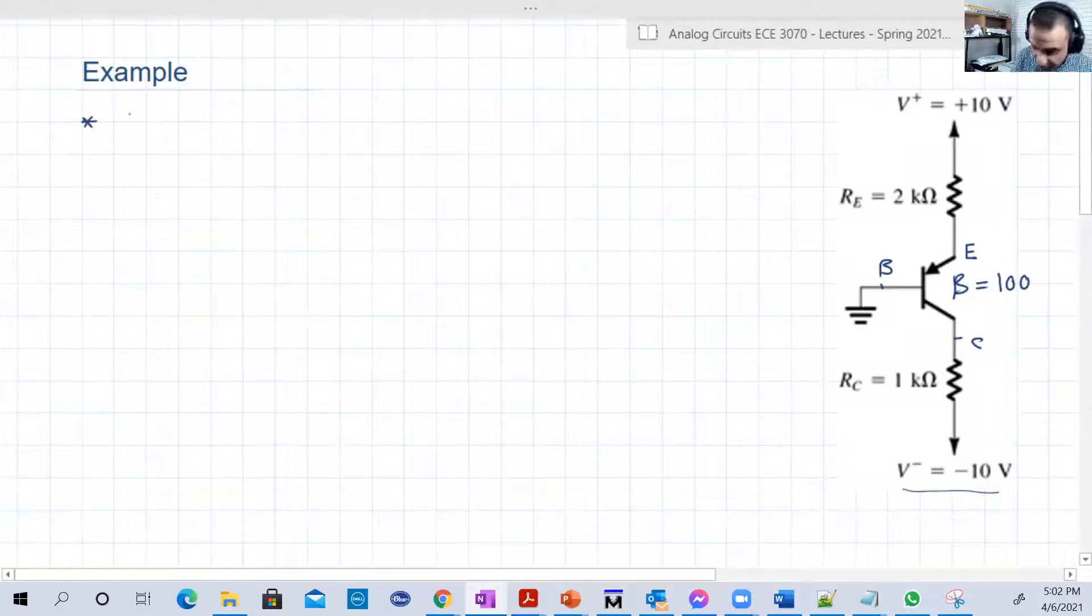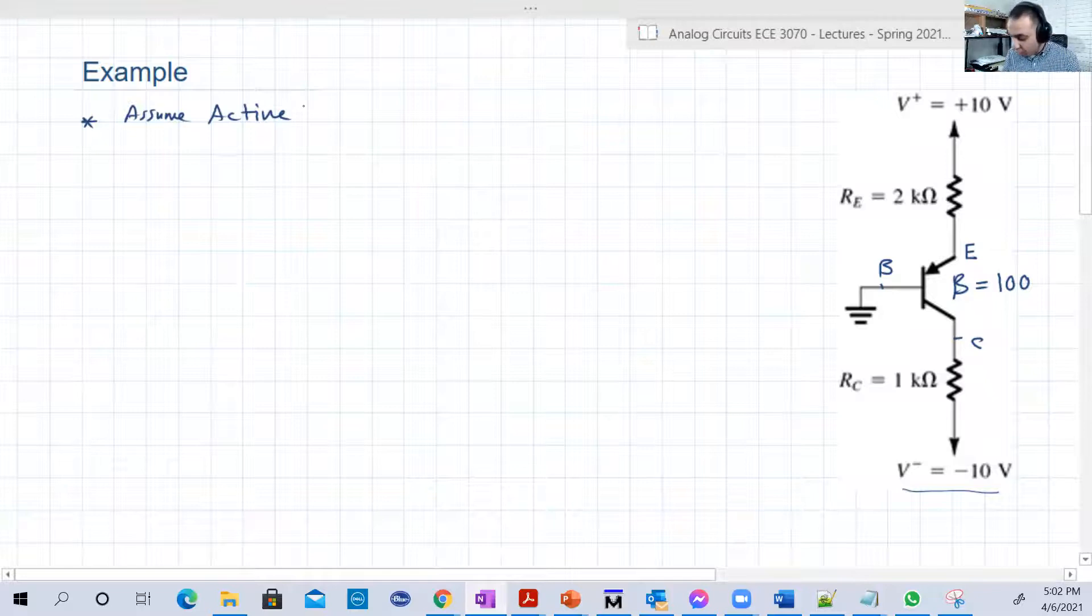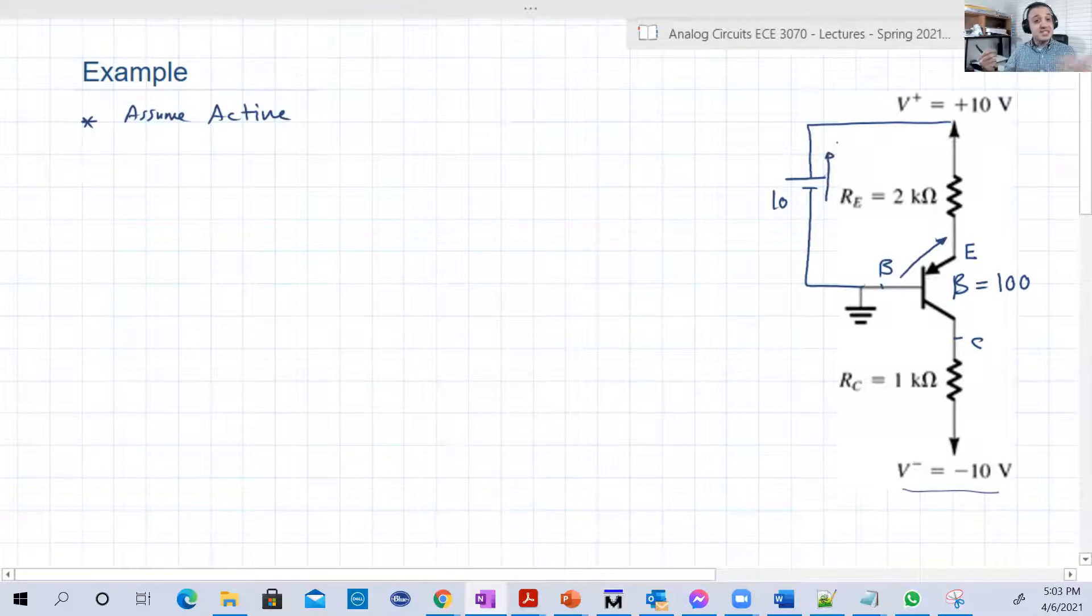Again, we're going to follow the same procedure. So we're going to assume active. Why? Because there is a source that can give the VEB this time, because this is the PNP transistor, 0.7. Where is that source? Just to draw the battery, the 10-volt battery. So that is a 10-volt battery. Where is VEB? It is in that direction, opposite to the battery. So yes, there is a source in that loop, that source can give the 0.7 because it's basically greater than 0.7. This is VEB here.